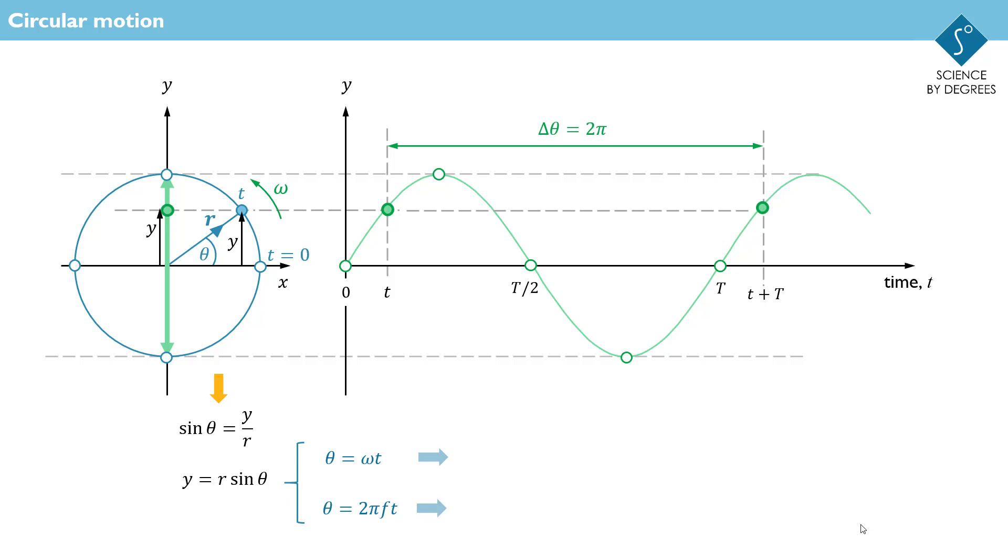we can write two useful expressions for y: y equals r sin omega t and y equals r sin 2pi ft.